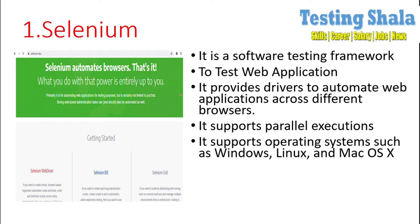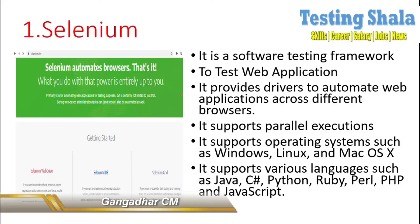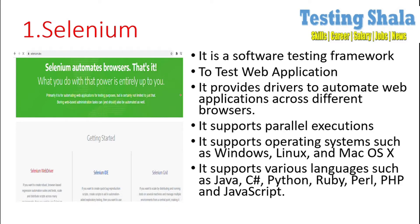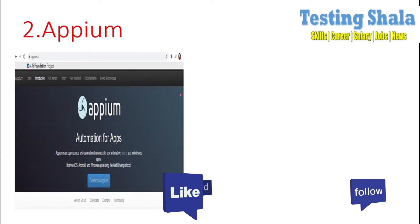Selenium also supports various operating systems — it supports Windows, Linux, and macOS. That is the biggest advantage of Selenium because it supports complete cross-platform across almost all platforms. Selenium also supports various programming languages such as Java, C#, Python, Ruby, Perl, PHP, and JavaScript. Even if you know only a particular language, you can still use Selenium to automate your web application.